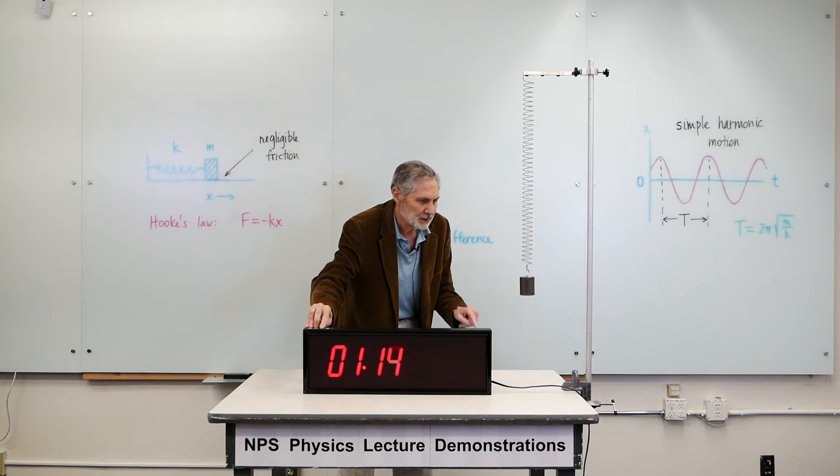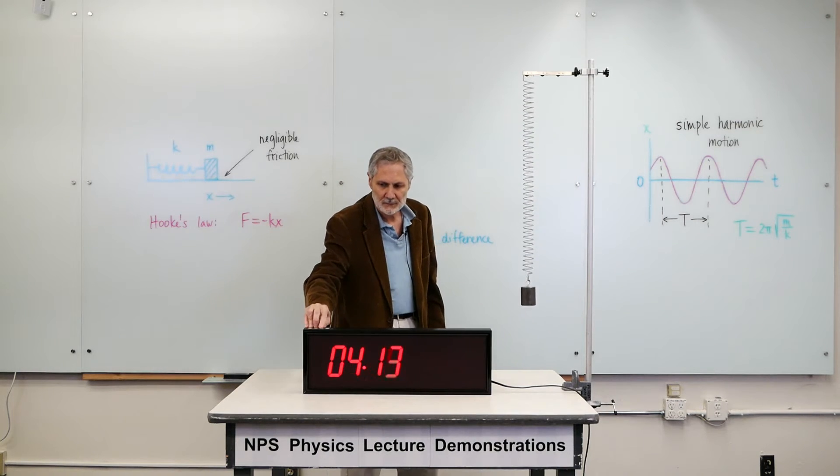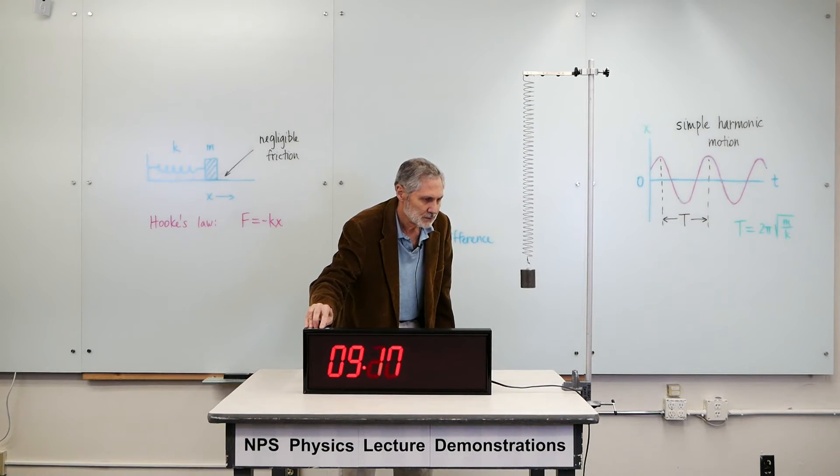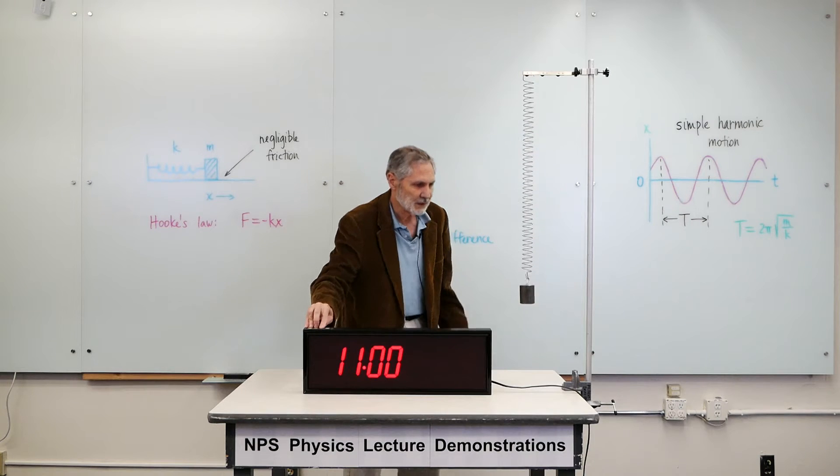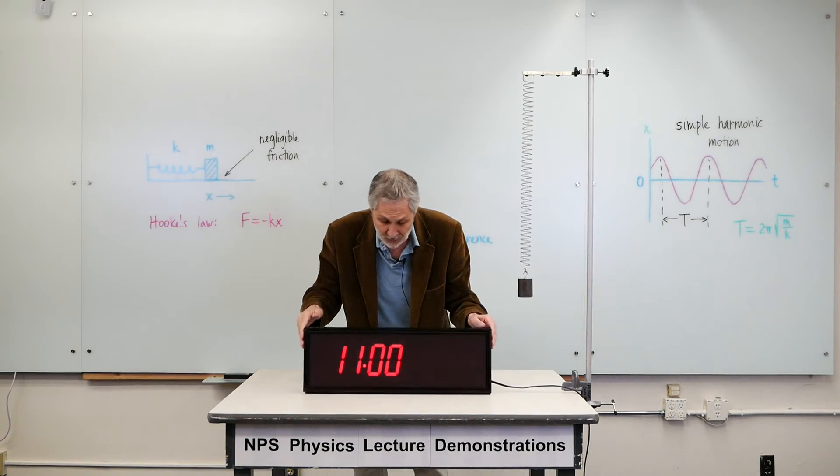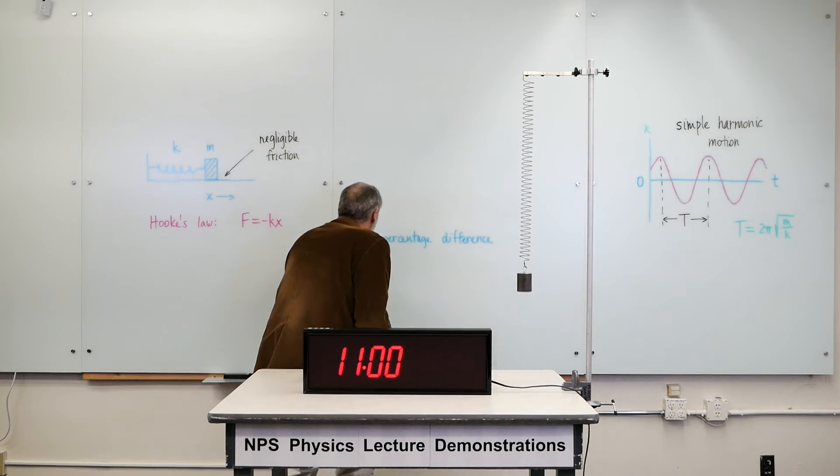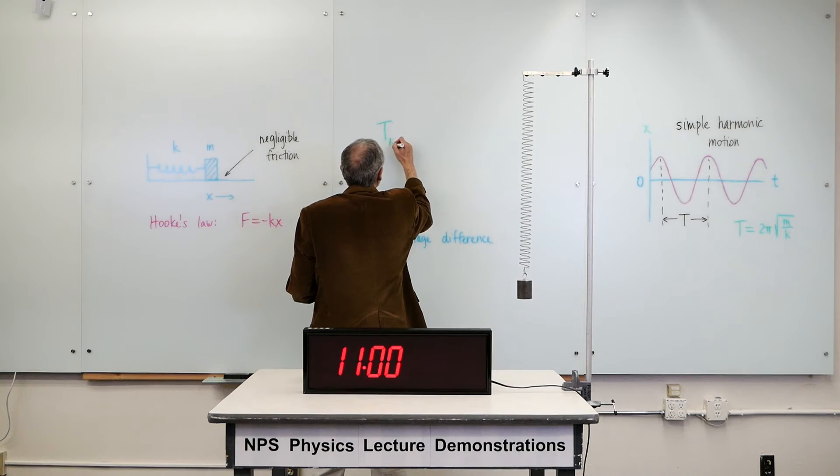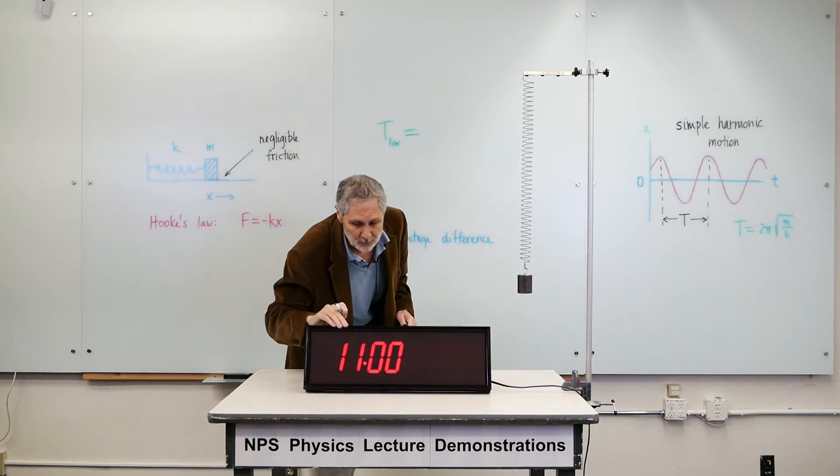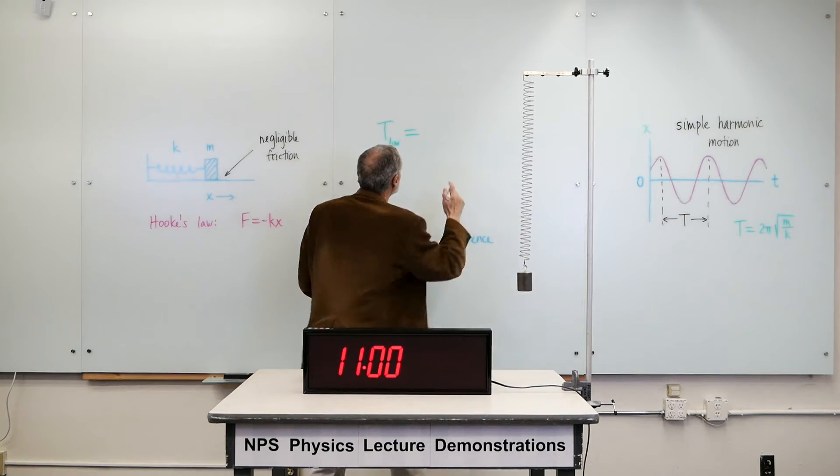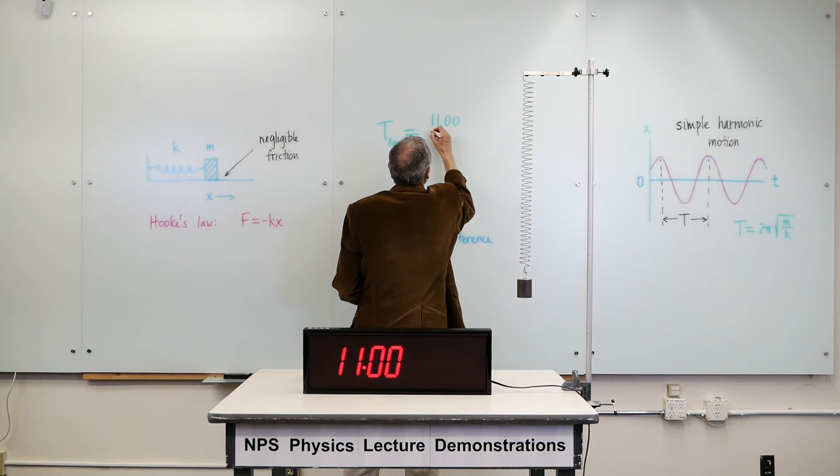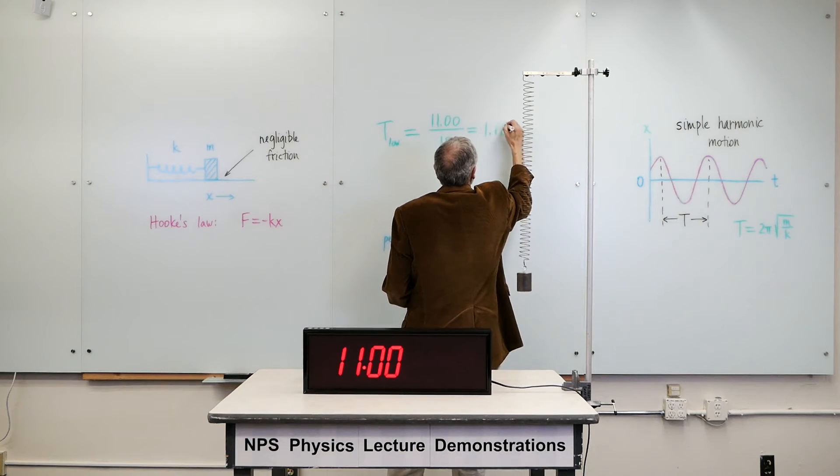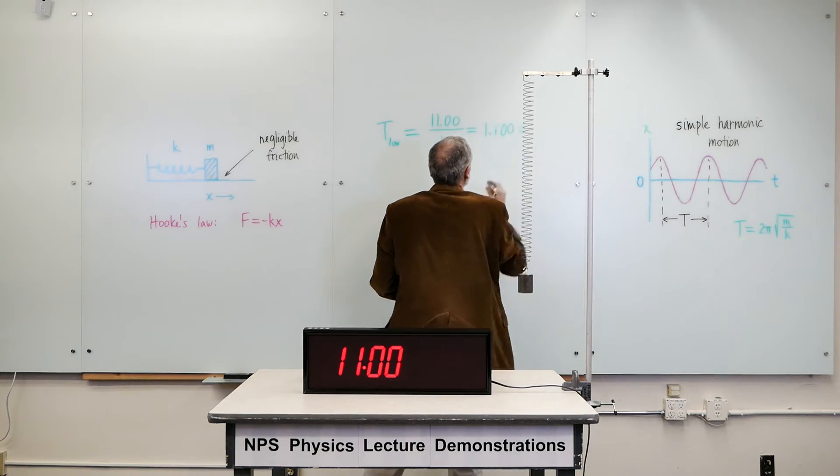One, two, three, four, five, six, seven, eight, nine, ten. Okay. So 11.00 seconds. So the period we got, the time, the period was 11.00 seconds for 10 oscillations. So this is 1.100 seconds. That's the period.